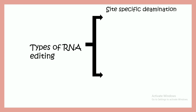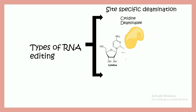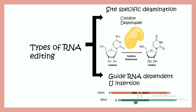Site-specific deamination is augmented by cytidine deaminase enzyme, which converts cytidine to uridine — simply converts C to U. There are other ways, such as guide RNA-dependent uracil insertion, which leads to a frame shift and ultimately changes the message in the mRNA.